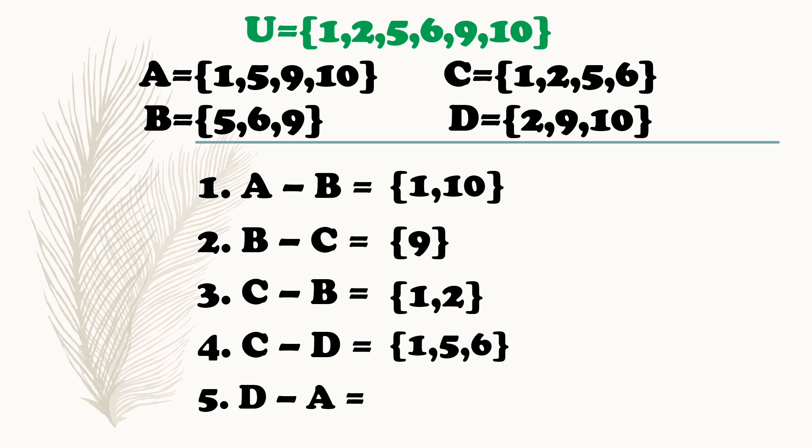Last example: difference of set D and set A. Elements ni set D: 2, 9, 10. Elements ni set A: 1, 5, 9, 10. Anong tatanggalin? 9 and 10. Tama. Refer to set D. Anong elements ang matitira kapag tinanggal si 9 and 10? That is 2.